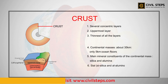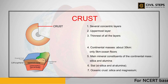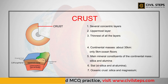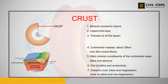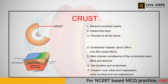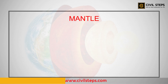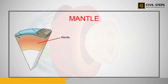The main mineral constituents of the continental mass are silica and alumina, so it is called SIAL — 'SI' from silica and 'AL' from alumina. The oceanic crust mainly consists of silica and magnesium, and therefore it is called SIMA — 'SI' from silica and 'MA' from magnesium. That was about the crust, which is the uppermost layer of the Earth.